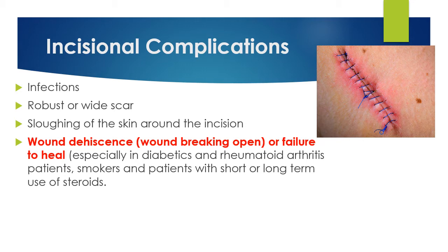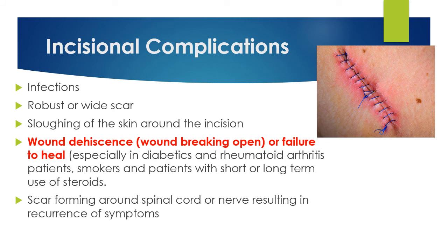Wound dehiscence occurs mainly with diabetic patients who have uncontrolled diabetes or very high blood sugar levels, immunocompromised patients, patients with autoimmune disorders such as rheumatoid arthritis who are on short- or long-term steroid use, and also with smokers. Additionally, scar tissue forming around the spinal cord or nerve can result in a recurrence of symptoms.